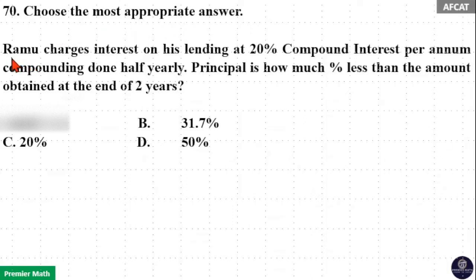Choose the most appropriate answer. Ramu charges interest on his lending at 20% compound interest per annum, compounding done half yearly. Principle is how much percentage less than the amount obtained at the end of 2 years?